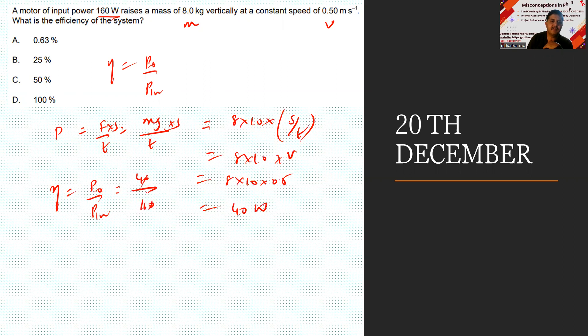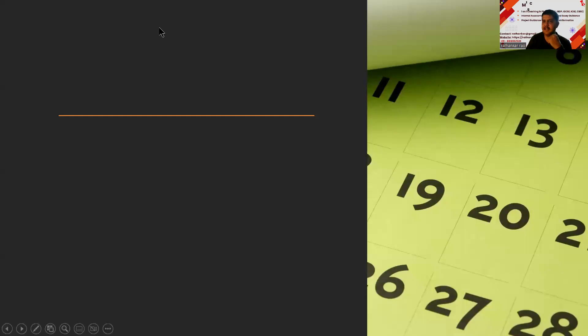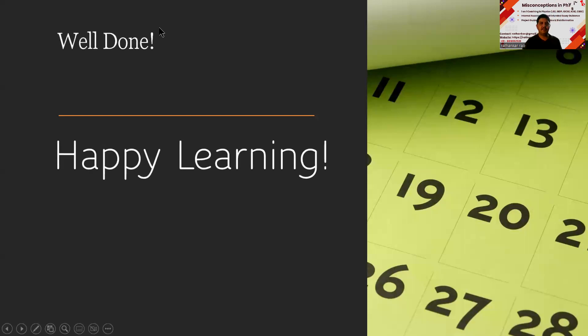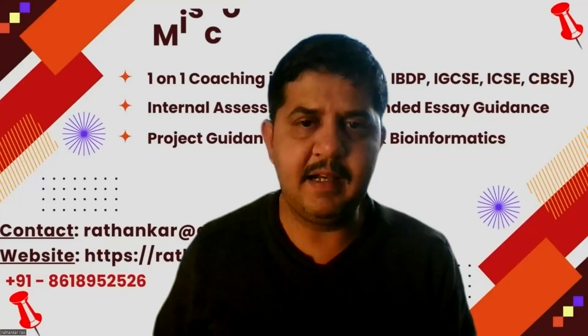Efficiency is equal to p output by p input. What is output? 40. What is the input? 160. So this should be one by four, or if you take percentage, it should be around 25 percent efficiency. Finally, we have come to an end for today's lectures.